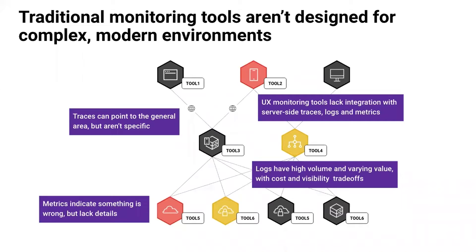Traditional monitoring tools rely only on visibility into one aspect of the system. Metrics will indicate that something's wrong, but they'll lack the details. Traces can point to a general area — for example, traces from your application source code — but they're not specific enough. And UX tools lack integration with the backend data. So if a user says, 'When I run this search on the website, it's slow,' it's often difficult to understand what happens at the API level.